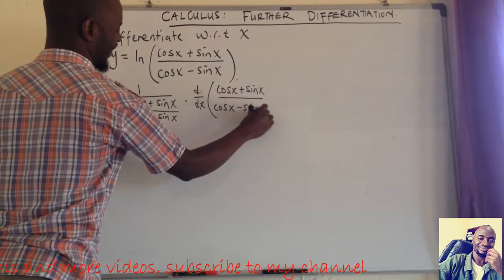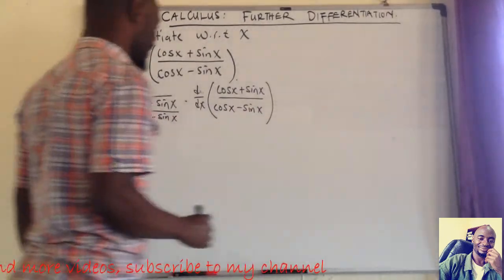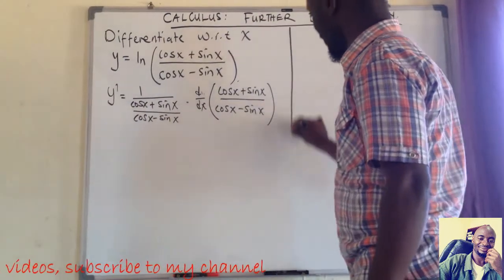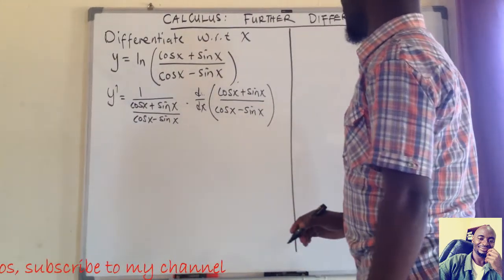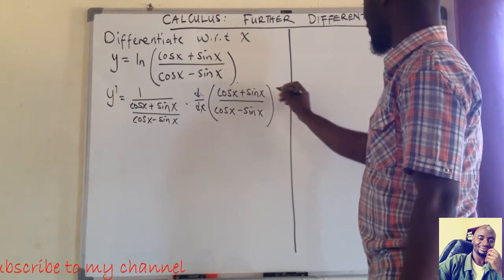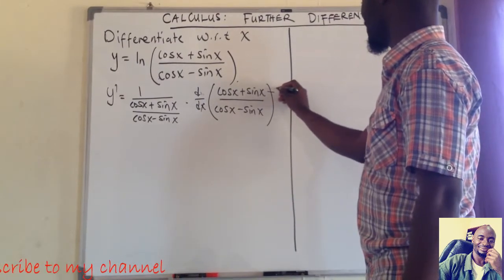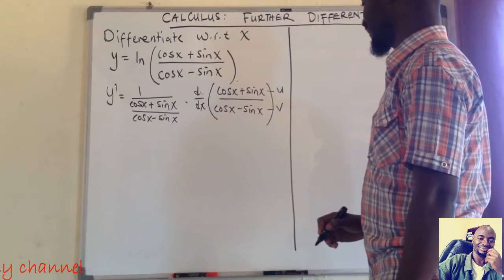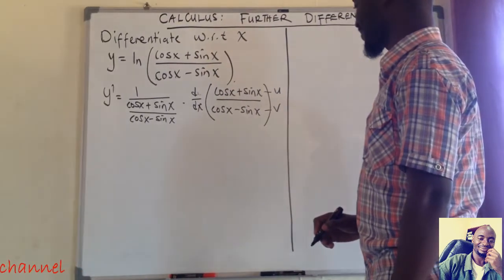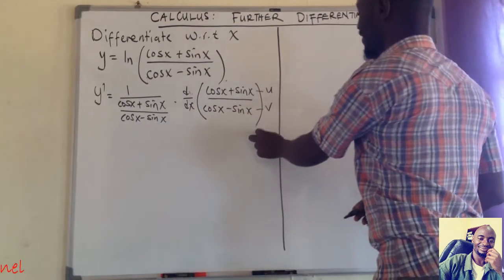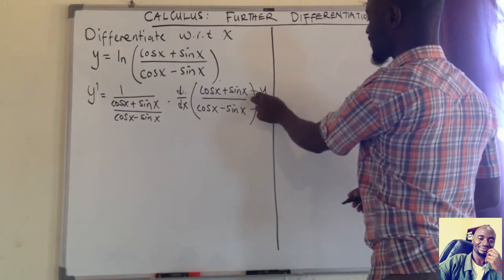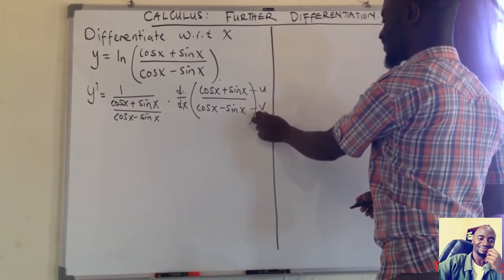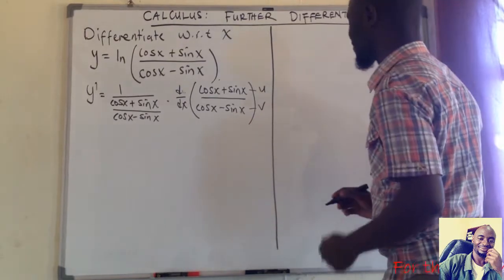Now, this inner function is presented as a fraction — it's a quotient — so I'm going to use the quotient rule. I can call the numerator u and the denominator v. So I know I'll have to use the quotient rule, meaning I first need to find the derivative of u and the derivative of v.